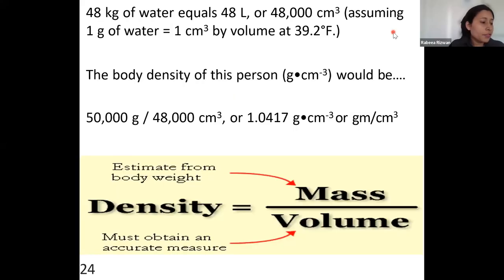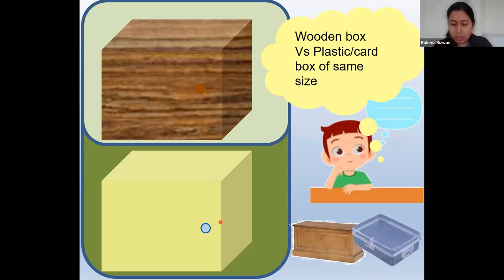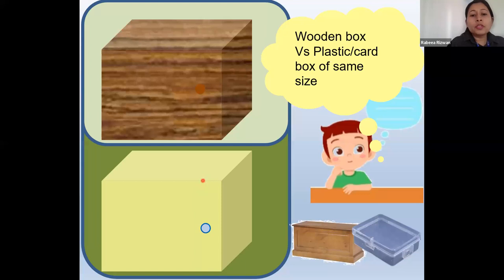In simple terms, density is the measurement of how tightly a material is packed together. Mass is the body weight, and volume is how much space a body occupies. For example, think of two boxes of the same size — one made of wood and one made of thin plastic. The wooden one will be heavier because its material is more densely packed than the plastic or cardboard. This is the difference in density.